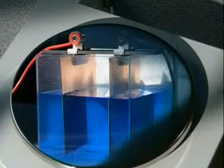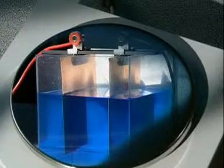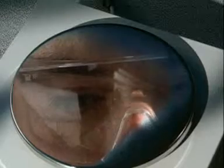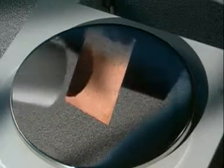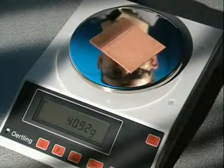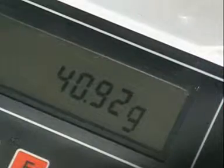Two hours later, and re-weighing provides some clues about what's happened. But first, the electrodes need to be rinsed and dried. The negative is now 40.92 grams. It's heavier than it was before.